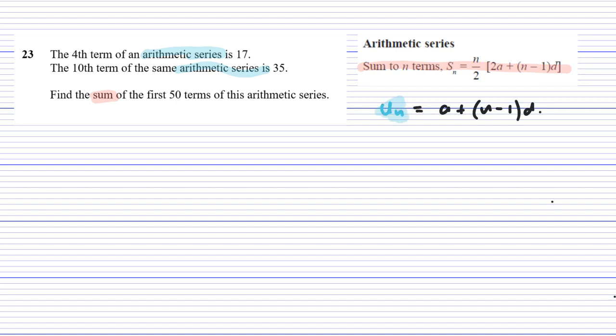UN gives me the term in a series. So UN is the term, SN is the sum.